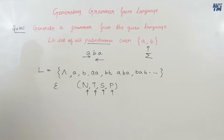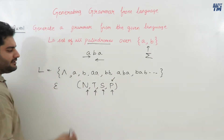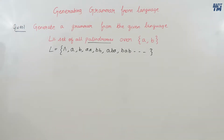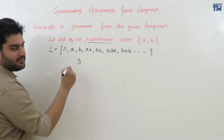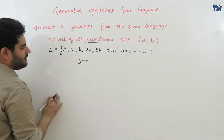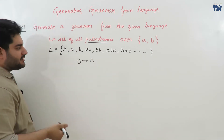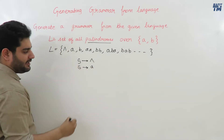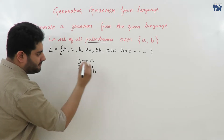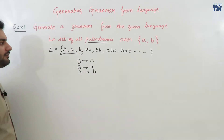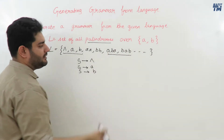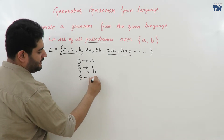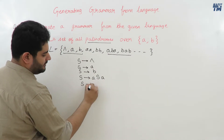Let's begin forming the production rules. We take the start symbol S. The start symbol can lead to null — this is one production for the null string. Or the start symbol can lead to a single input symbol: S → a, or S → b. These three handle the base cases. For strings like aba or bab, we define: S → aSa, or S → bSb.